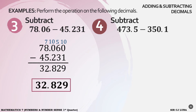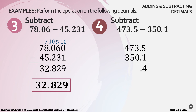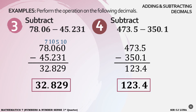Example number 4: subtract 473.5 minus 350.1. Align the decimals. 5 minus 1 equals 4. Decimal point. 3 minus 0 is 3. 7 minus 5 is 2. 4 minus 3 equals 1. So we have 123.4 as the answer for item number 4. So ganun lang kadali mag-add at mag-subtract ng mga decimals.